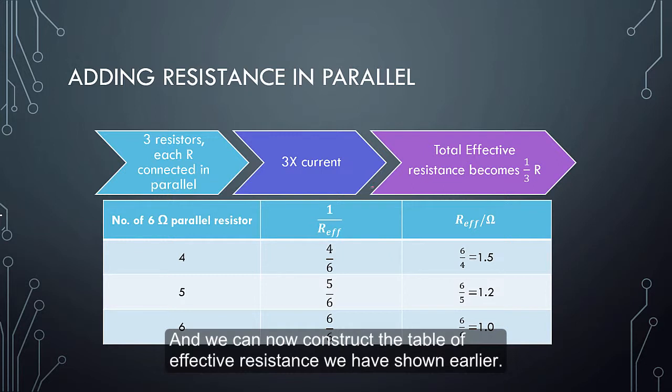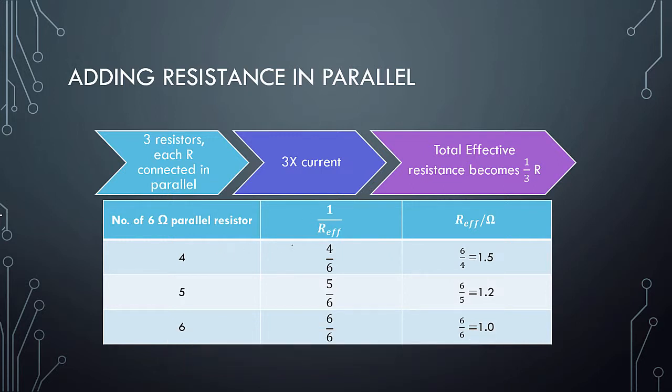And of course you can build the following table, which is actually the previous one. If you have 4 parallel resistors, it's 4 times the current, and your effective resistance becomes 6 divided by 4. And 6 divided by 5 if you have 5, 6 divided by 6. So that's how you obtain your effective resistance if the resistances are all the same.